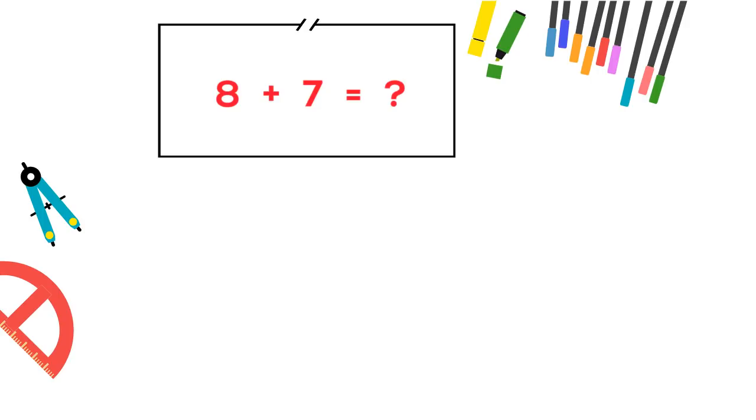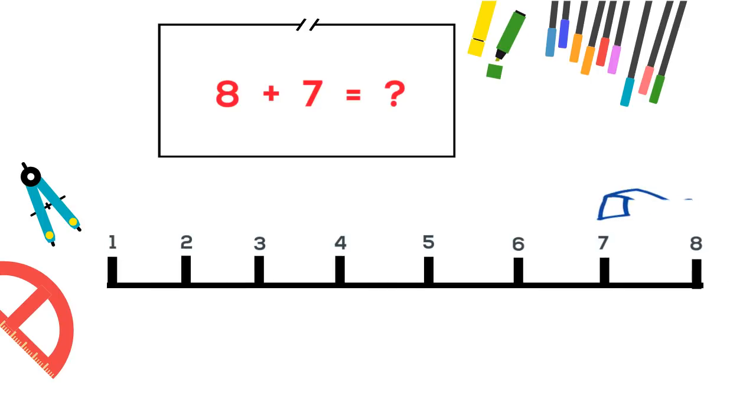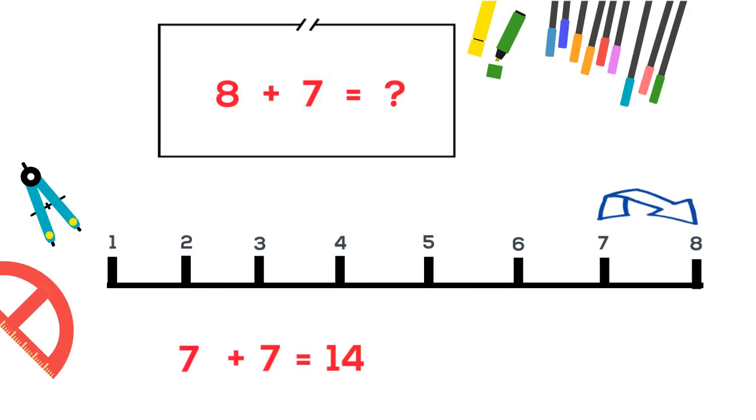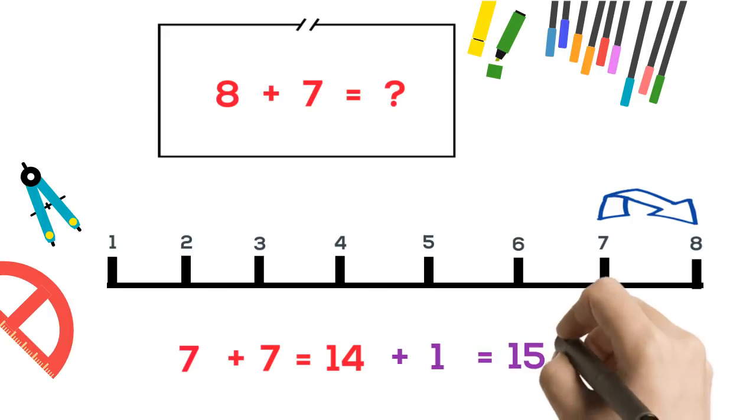Here, 7 and 8 come one after another in the number line, so our method is applicable here. Select the smallest number, here 7. Double it, that is 14, then add 1 with it. Answer will be 15. So 8 plus 7 is 15.